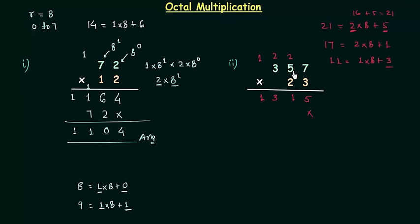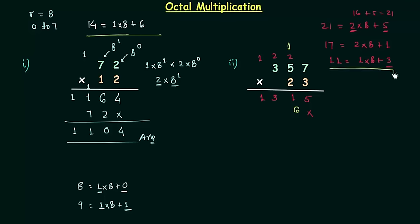When we multiply 357 by 2, we start writing results from the shifted position. 2 multiplied by 7 is 14; 6 will come here and 1 will go as carry. 2 multiplied by 5 is 10, and 10 plus 1 is 11; 3 will come here and 1 will go as carry. 2 multiplied by 3 is 6, and 6 plus 1 is 7, which is an octal number.